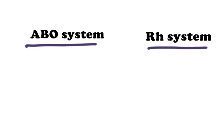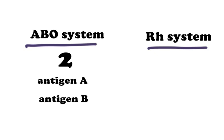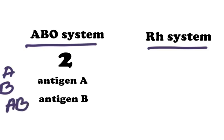In the ABO system, there are two types of antigen: Antigen A and Antigen B. If a person has Antigen A in the RBC membrane, their blood group will be A. In the case of presence of Antigen B, the blood group will be B. In the case of presence of both, the blood group will be AB. And if neither antigen is present, it will be O.